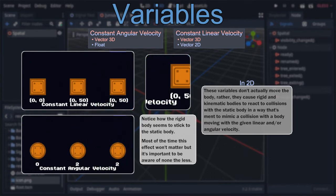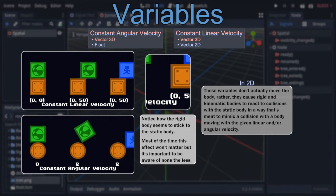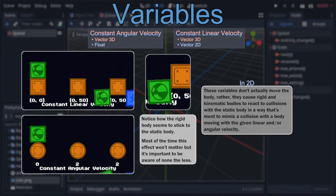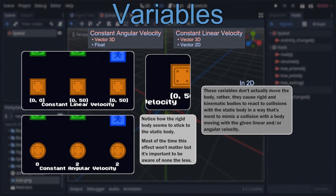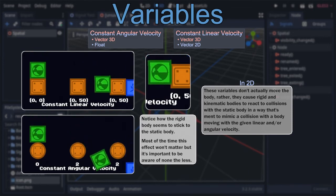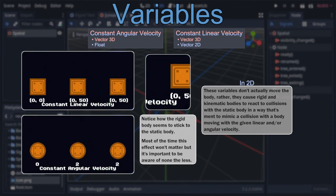But, even with that in mind, this is still an extremely useful feature for creating certain kinds of more dynamic props, the most obvious example of which being conveyor belts.